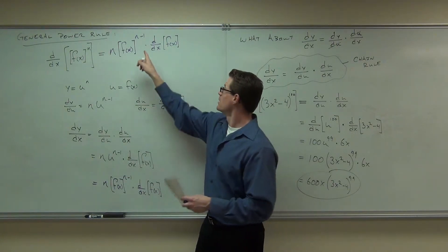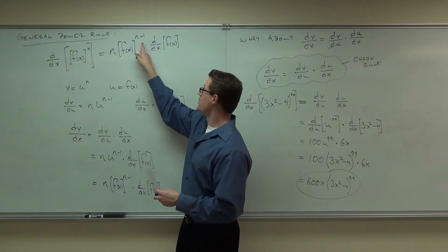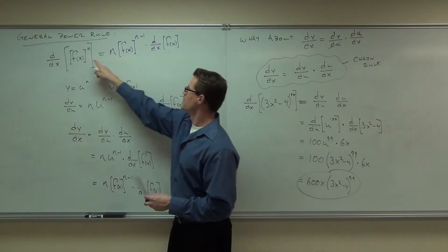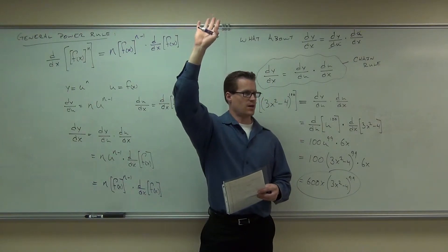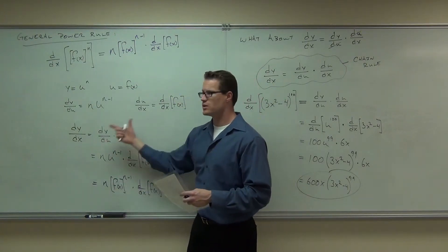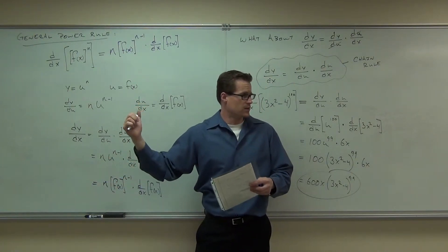Look at what it says. Bring down the exponent as usual. Bring down the exponent as usual. Then multiply by the derivative of the inside. That's what that says. Raise your hand if you feel okay with that. So do you have to show me all this to do it? No, I just proved it for you. This is kind of a proof for you to be able to do that.